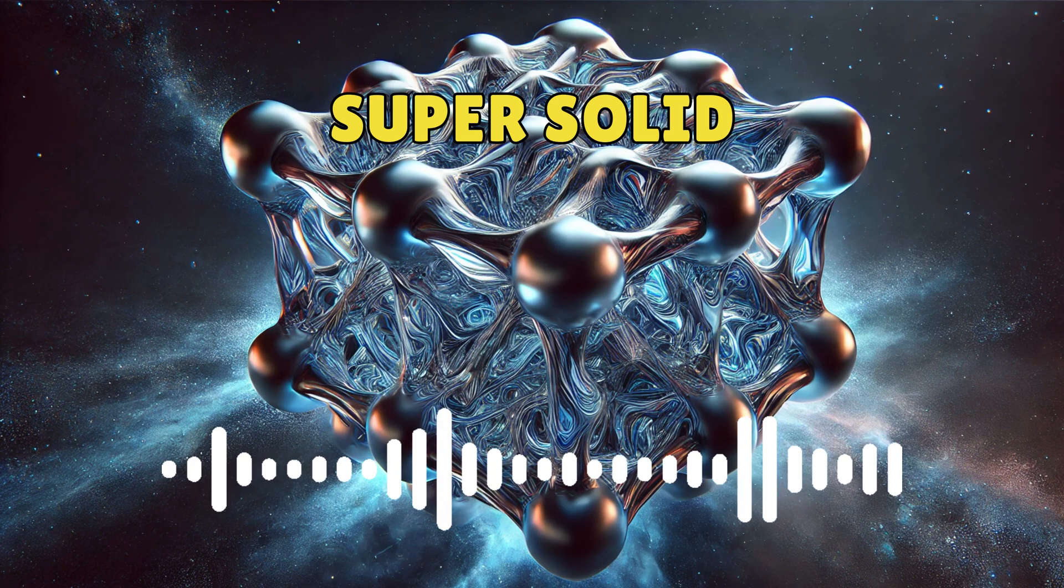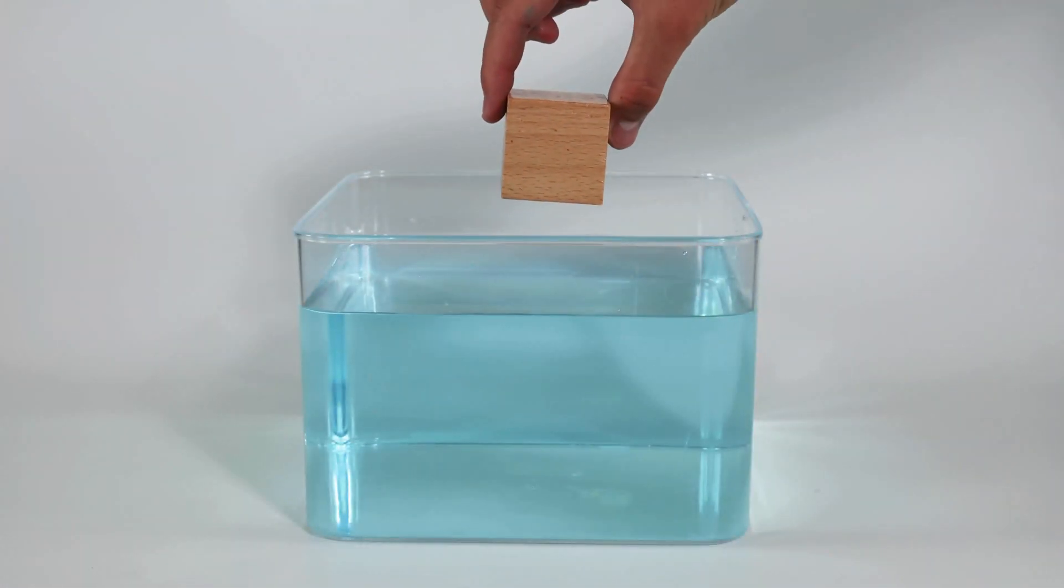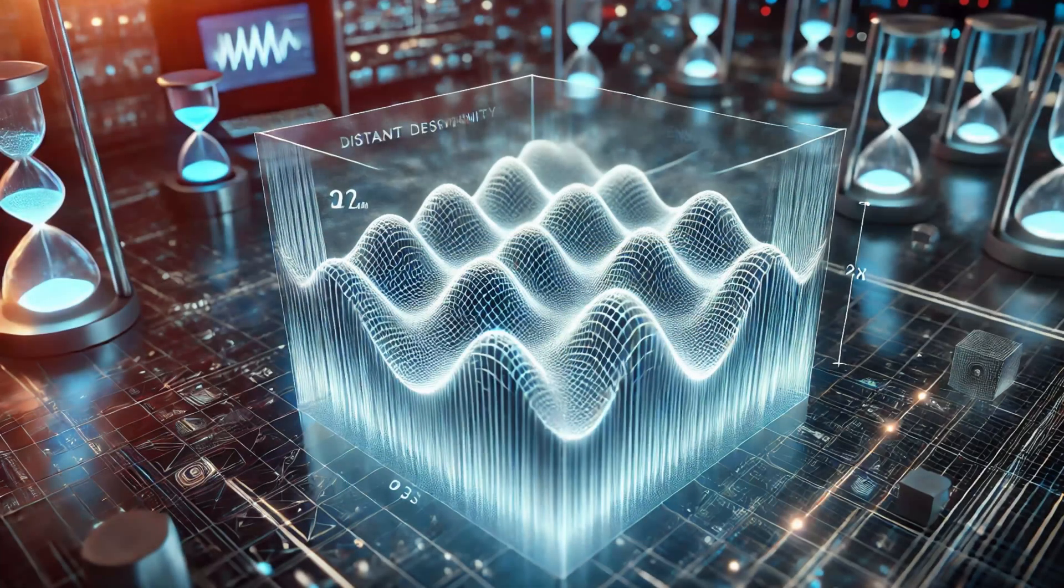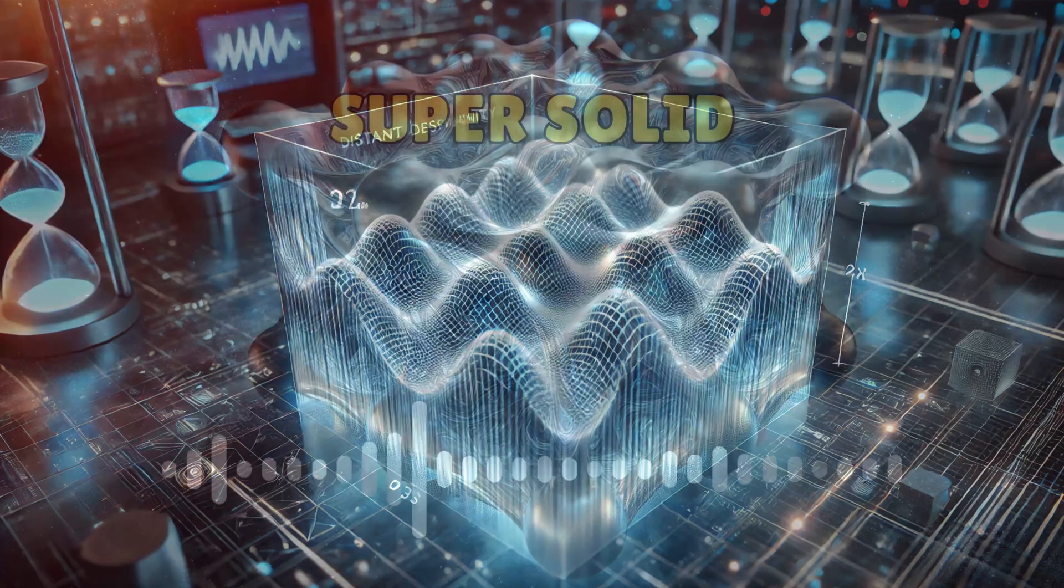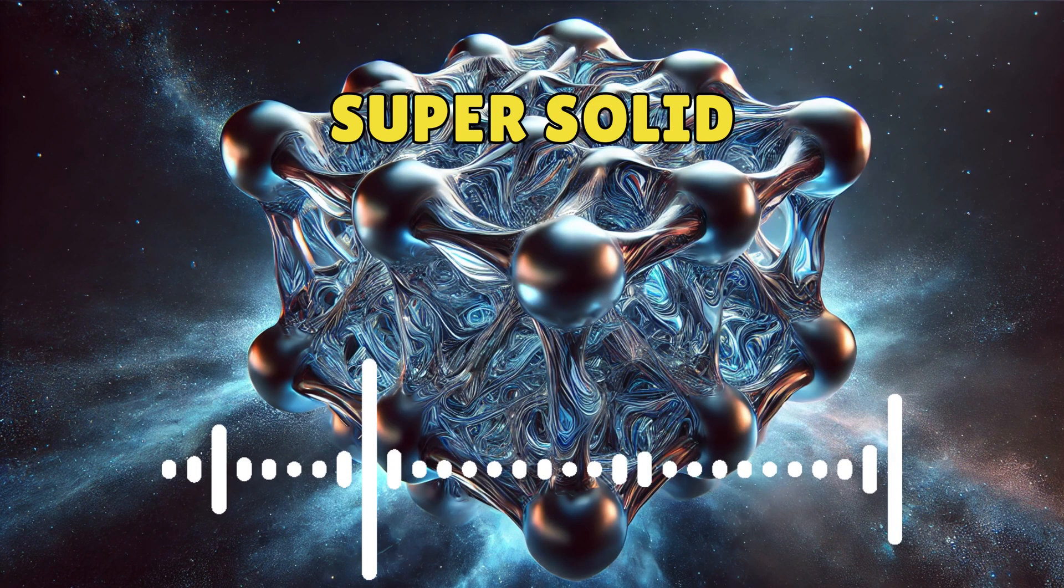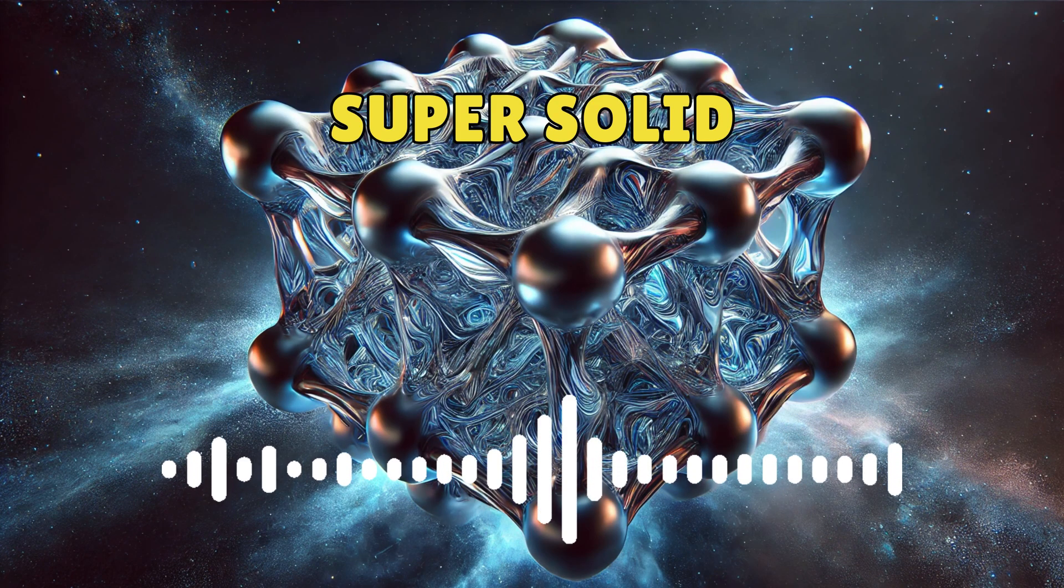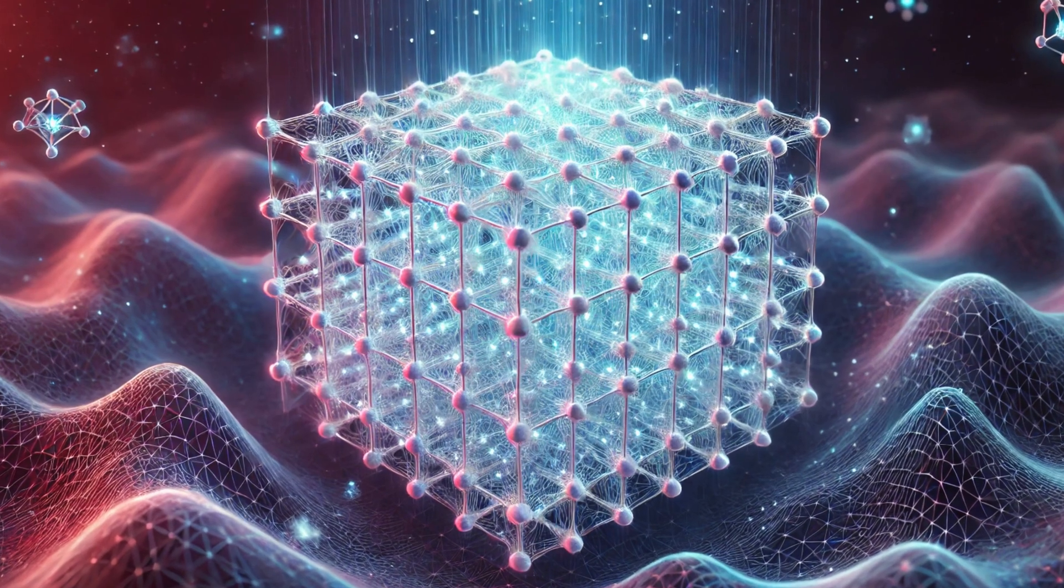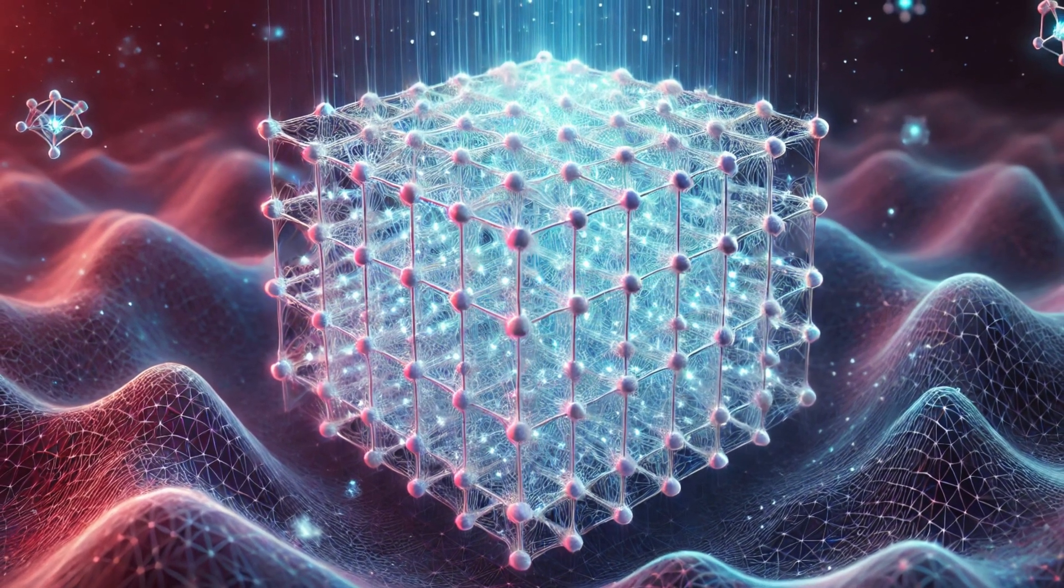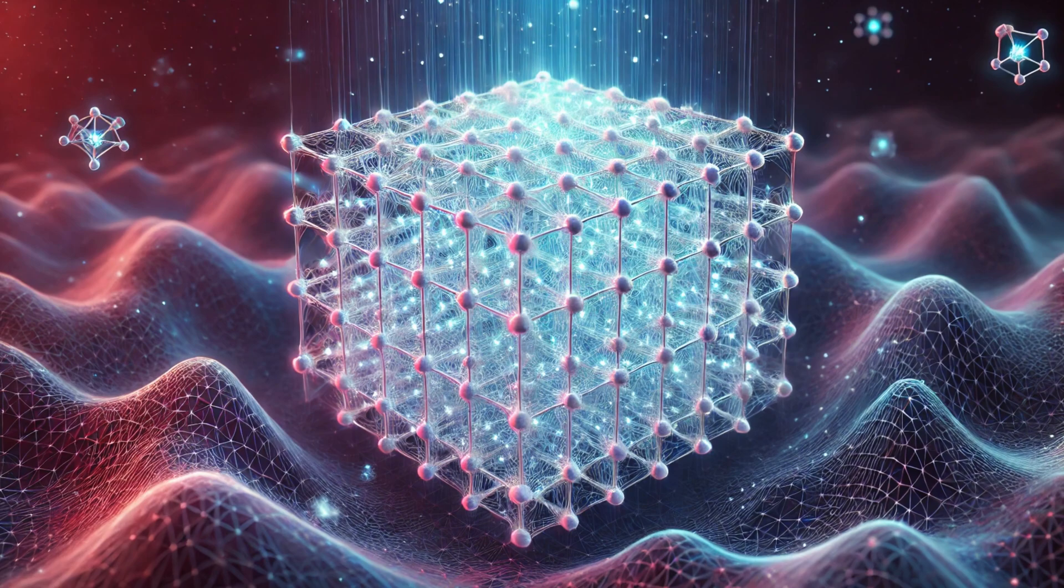And how did the researchers actually prove that they'd done it? They looked at the density of the polaritons and saw what they called a distinct modulation in space. It's kind of like a fingerprint that tells you there's crystallization happening here. The polaritons are arranging themselves in that ordered structure. But they also saw something else - coherence. Coherence means that the polaritons are all moving together in sync, like a single unbroken wave. It's a hallmark of superfluid behavior. So they had the solid structure, the crystal lattice, and they had the frictionless flow. It was undeniable. They had created a super solid from light.